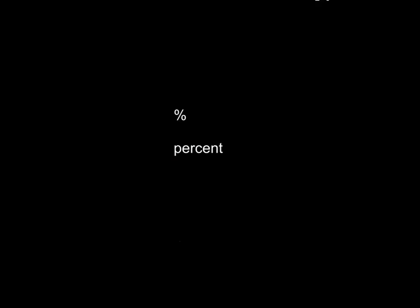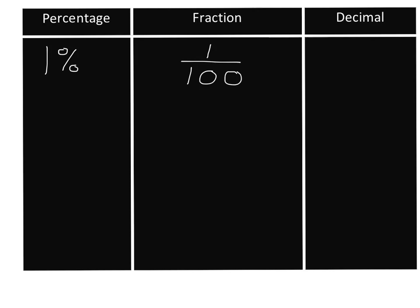Let's look at some examples to make it clear. If I take one percent, this quite simply means one per hundred — one over a hundred, a fraction just like that. This makes it very easy to turn a percentage into a fraction and into a decimal. One percent is one over a hundred, and from our work on decimals and fractions, this will just be 0,01.